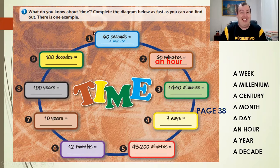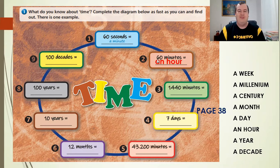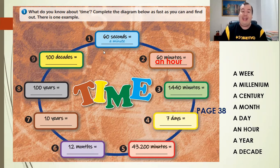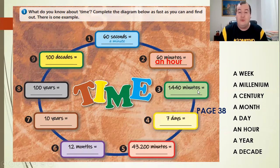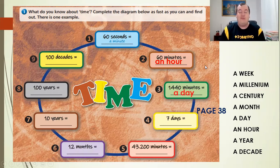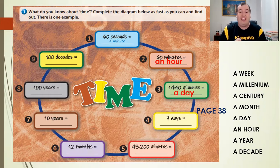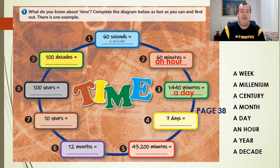Considerando que você já terminou todos, vamos ver se você fez certo? Pega a caneta verde pra corrigir. Então, vamos lá. So, 60 minutes equal a minute. 60 minutes equal an hour. And 1,440 minutes equals what? Aha, a day. 1,440 minutes, it's equals a day, okay?